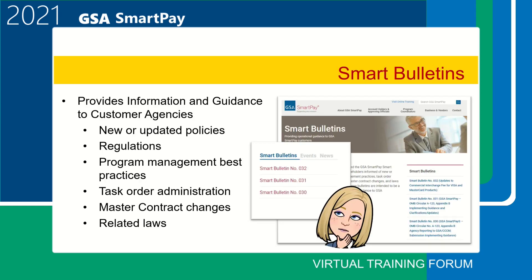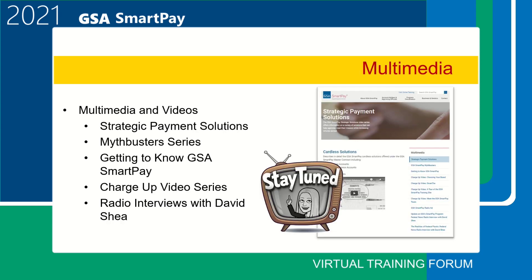SmartBulletins can be found on the homepage or in the footer of the website. They provide information and guidance to customer agencies and discuss topics such as new or updated policies, regulations, program management best practices, task order administration, master contract changes, and related laws. The multimedia section is where our video series are located, including the Charge-Up series, Mythbusters, and the new Strategic Payment Solutions video series. We are continually adding new videos about important GSA SmartPay topics.